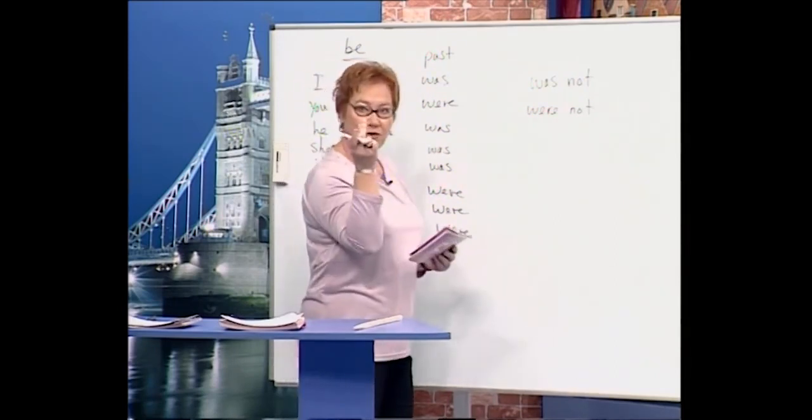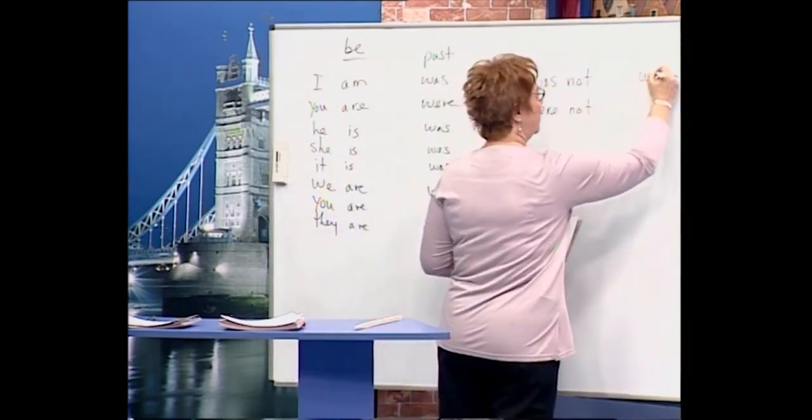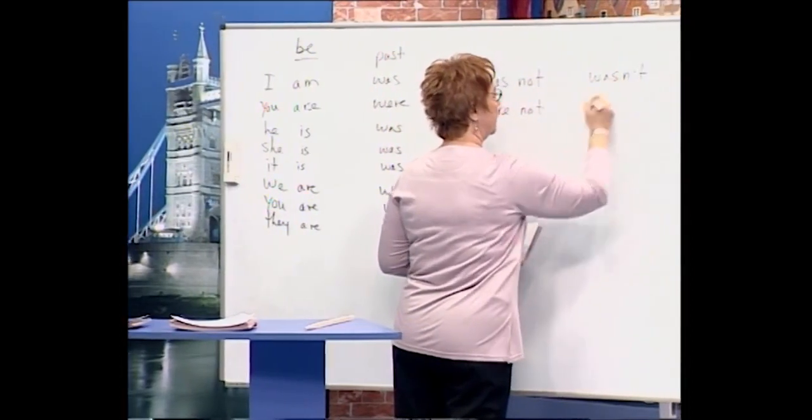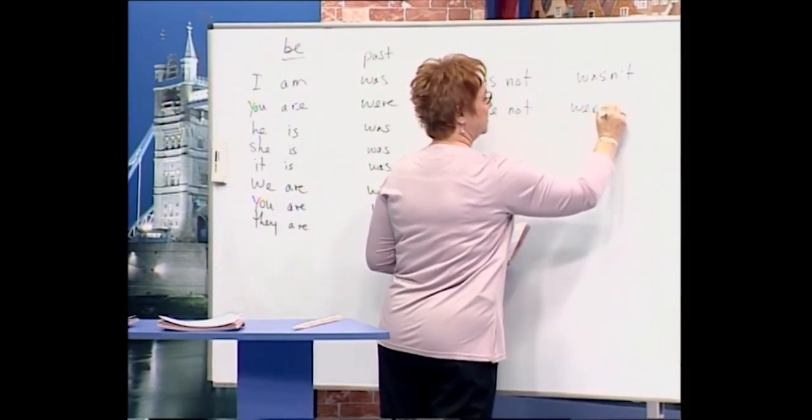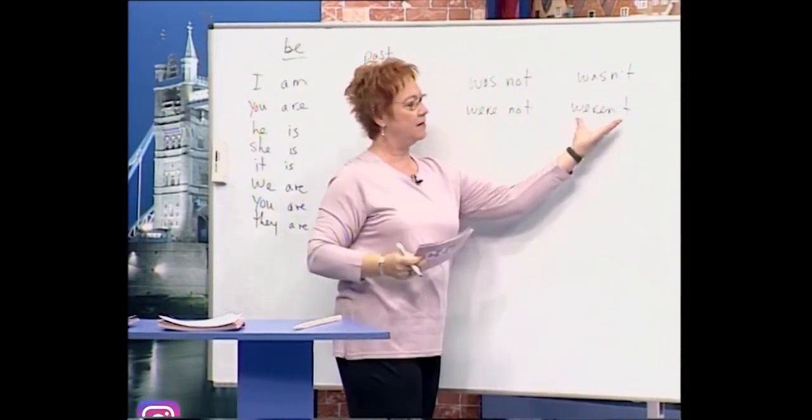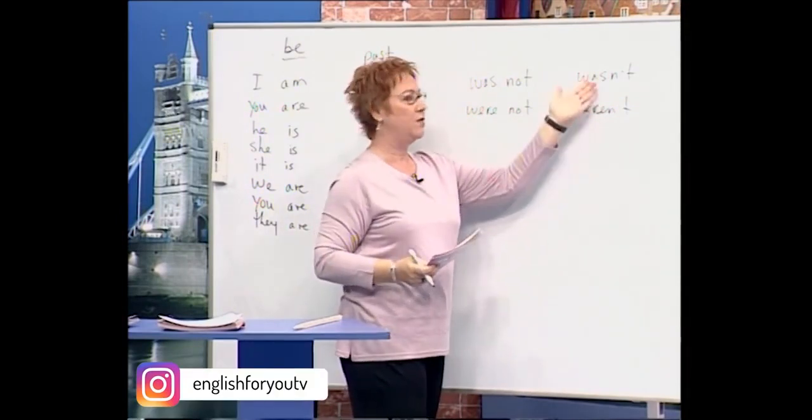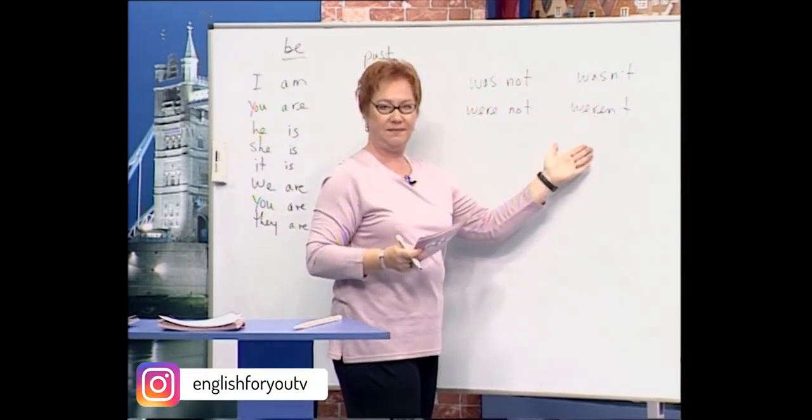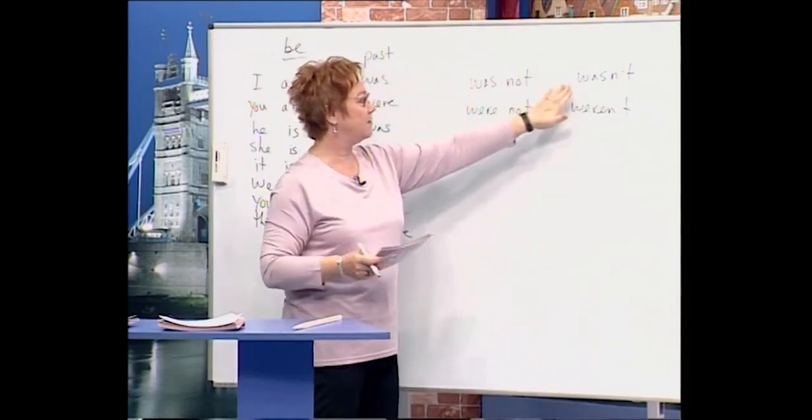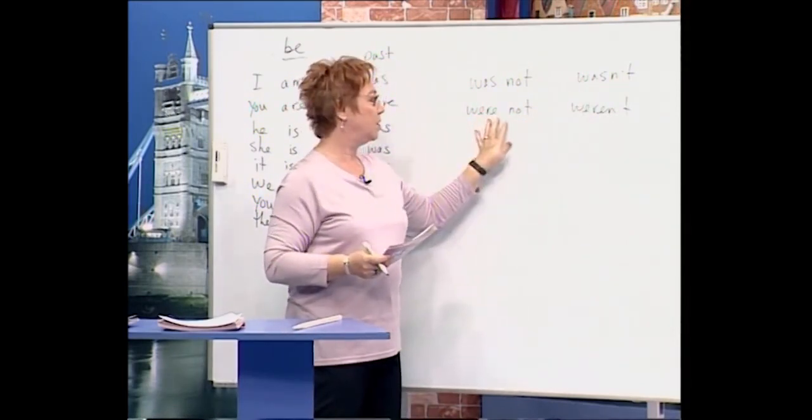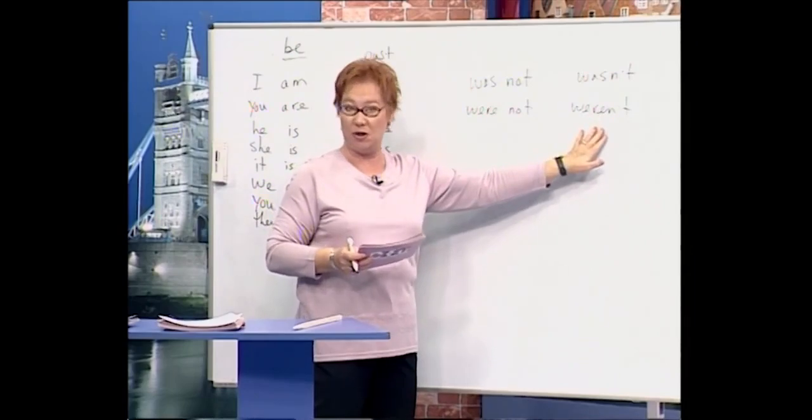Now to make them shorter, we say wasn't and weren't. Okay, now it's shorter. I wasn't, you weren't. So was not becomes wasn't, were not becomes weren't.